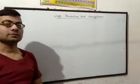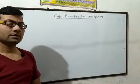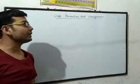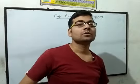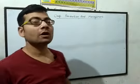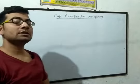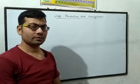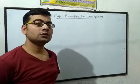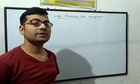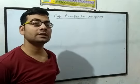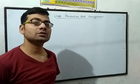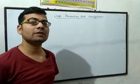Hello friends. In the previous lecture on crop production and management, we discussed what a crop is and the types of crops mainly found in India. There are two types of crops: the Kharif crop and Rabi crops. We also covered the various steps taken by the farmer for preparing the field and providing manure and chemical fertilizer.